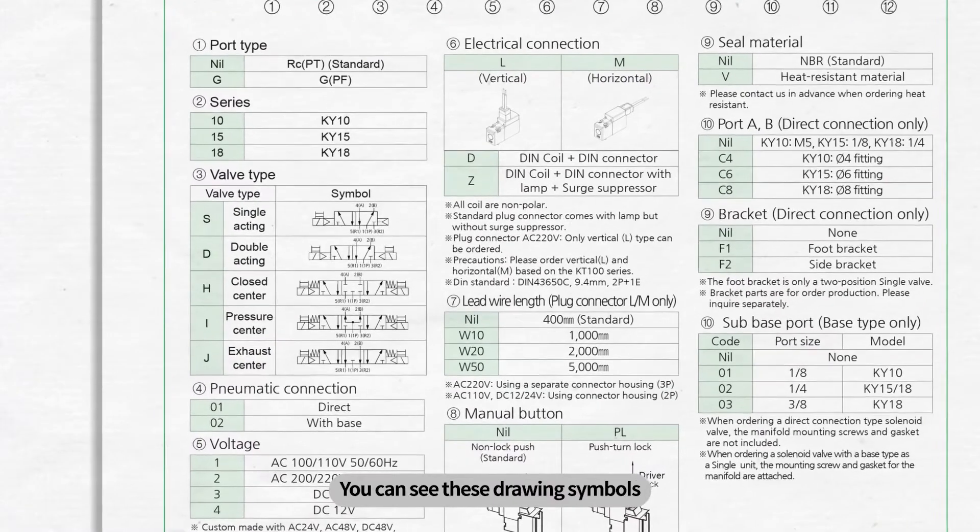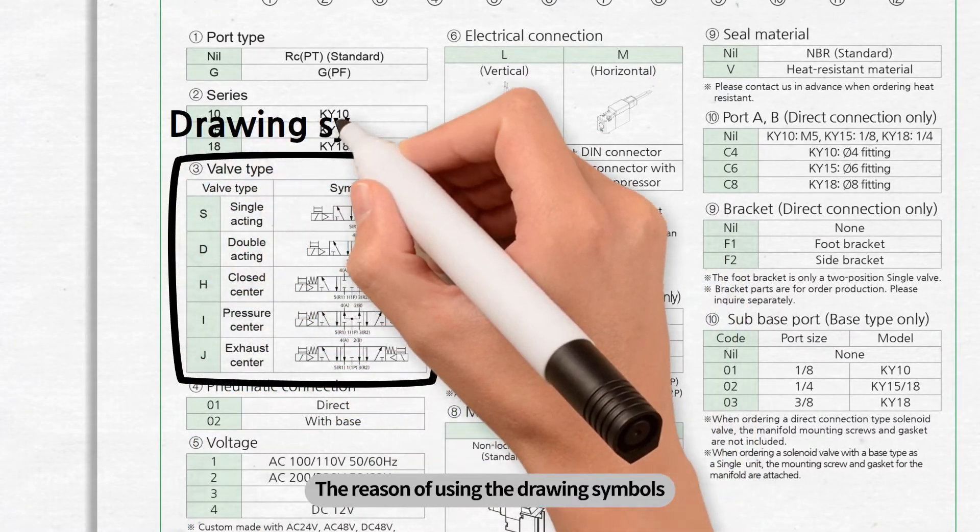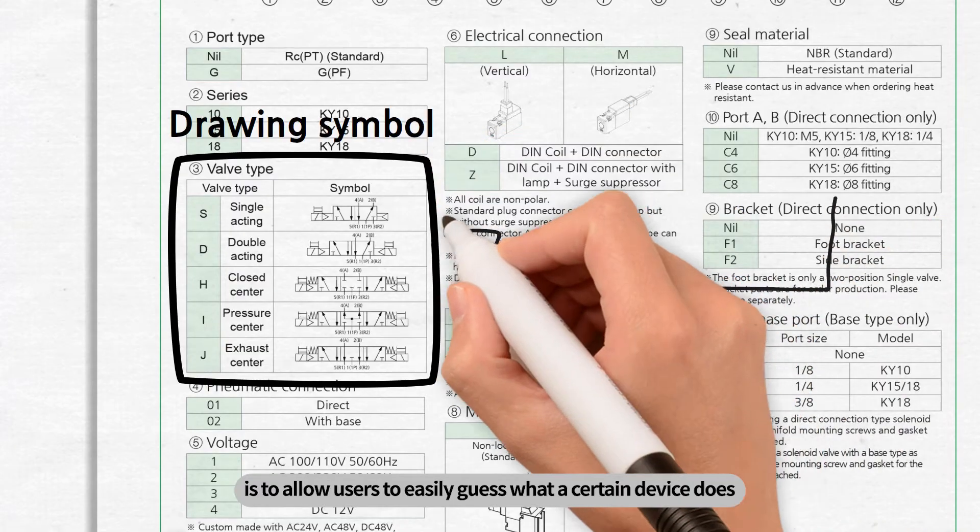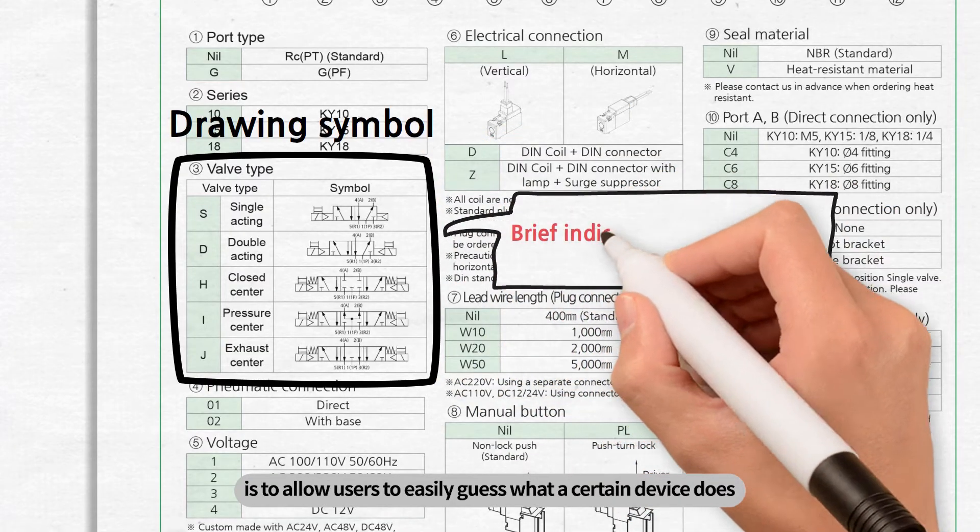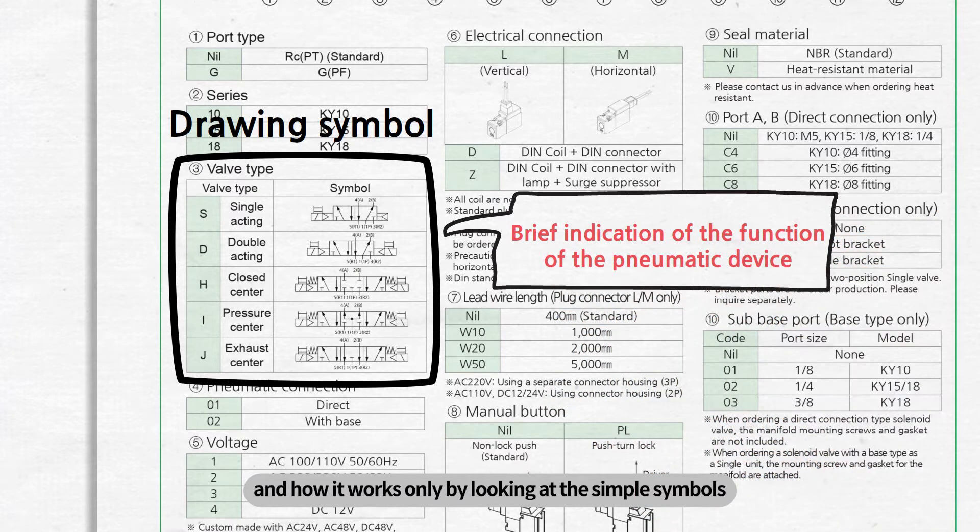You can see these drawing symbols in a catalog of pneumatic products. The reason for using drawing symbols is to allow users to easily guess what a certain device does and how it works, only by looking at the simple symbols.